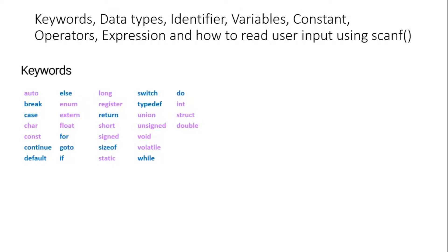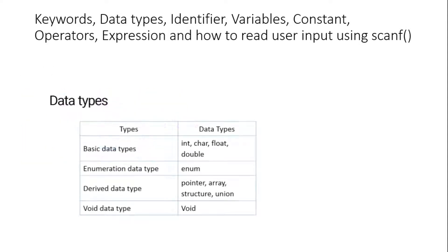Next, we learned about keywords, data types, and related topics. Keywords are already defined in C programming to perform specific tasks. There are four categories of data types. Basic data types include int, char, float, and double. Derived data types include pointers, arrays, and structures, which we covered in previous sessions.